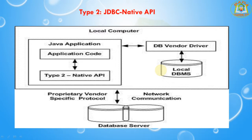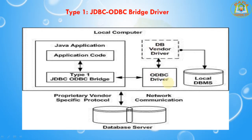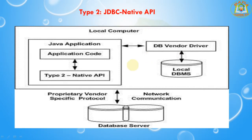The Oracle Call Interface (OCI) driver is an example of a Type 2 driver. In Type 2, the Java application interacts directly with the database vendor driver — there is no ODBC driver as a mediator. Compared to Type 1, which has an ODBC driver as mediator, Type 2 is a little bit faster because the Java application interacts directly with the database vendor driver, which in turn interacts with the database management system.